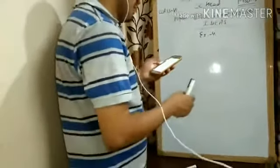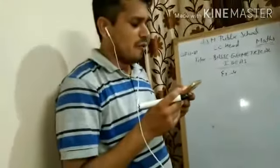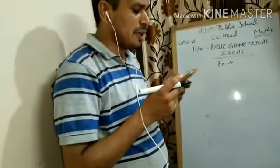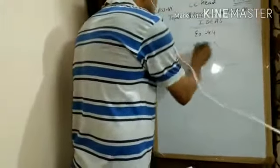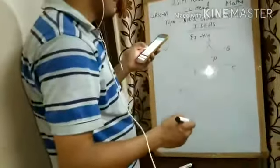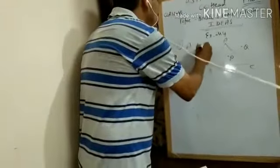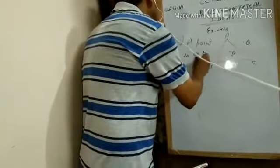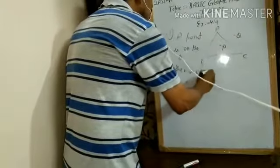In Exercise 4.4, Question 1 asks us to draw a rough sketch of triangle ABC, mark a point P in its interior and a point Q in the exterior. If a point is on the triangle itself, it is neither inside nor outside - it is on the triangle. This is a very easy question.